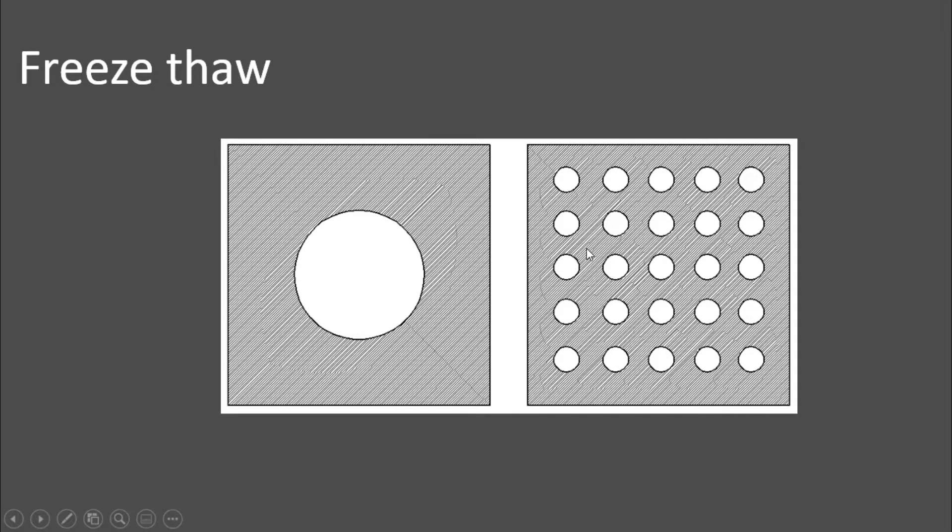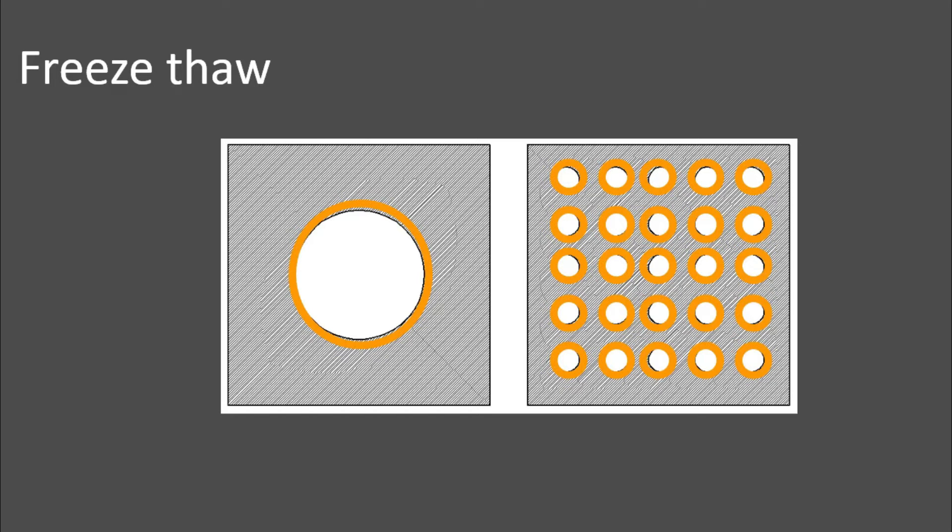So this orange here is something called the protected paste concept. We get much more protection out of the stuff in orange than the air void system on the right than we do out of the one on the left. That's why we want small, well-distributed bubbles and the air volume is not enough. Got a video about that if you want to check it out.